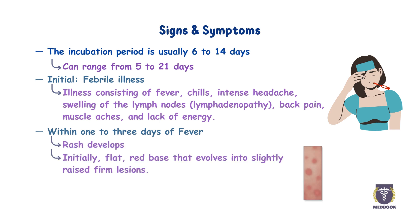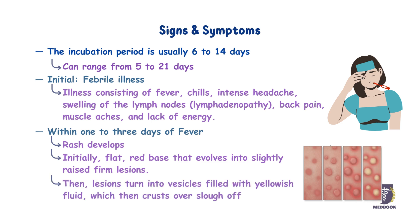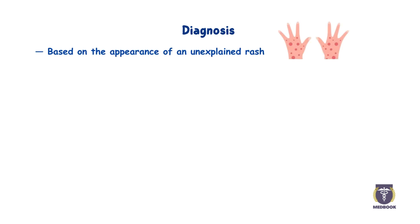Initially, lesions consist of a flat, red base that evolves into slightly raised, firm lesions. Afterwards, lesions turn into vesicles filled with yellowish fluid, which then turn to crusts that dry and eventually slough off.